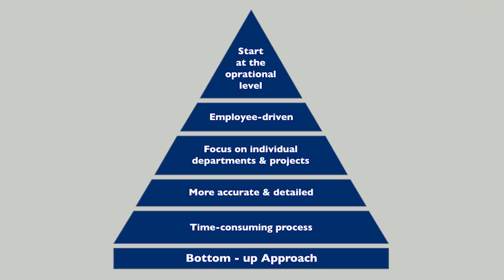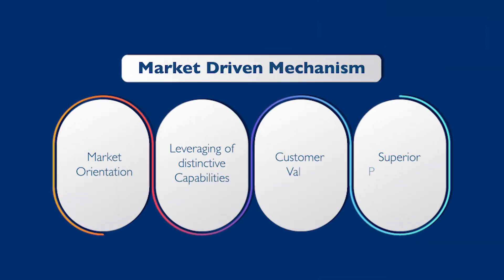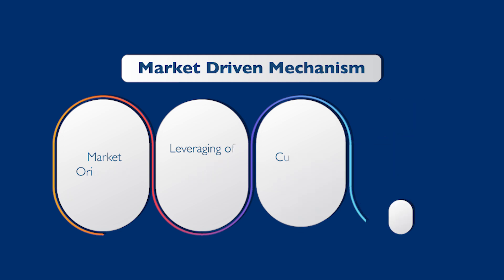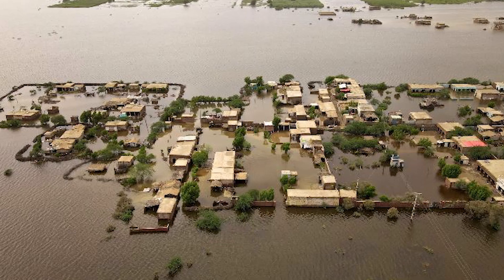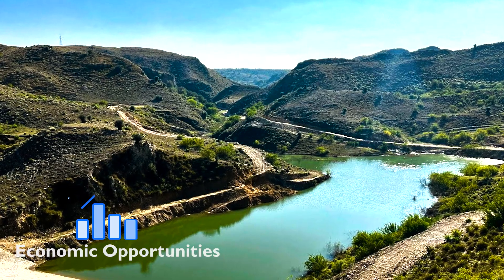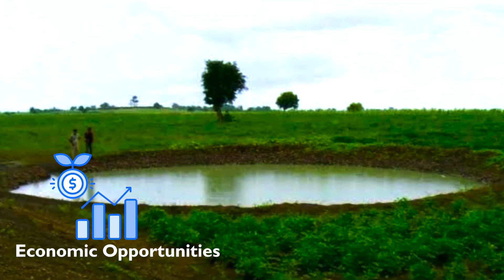From this learning, a theory of change has been developed for this new water activity. This theory says that if a community-driven, bottom-up approach — where cultural capital such as trust, reciprocity, and informal institutions can be applied — and if market-driven mechanisms are adopted at a local scale to develop integrated water resources management models, then floods could be transformed into economic opportunities through agriculture, forestry, and other beneficial uses.